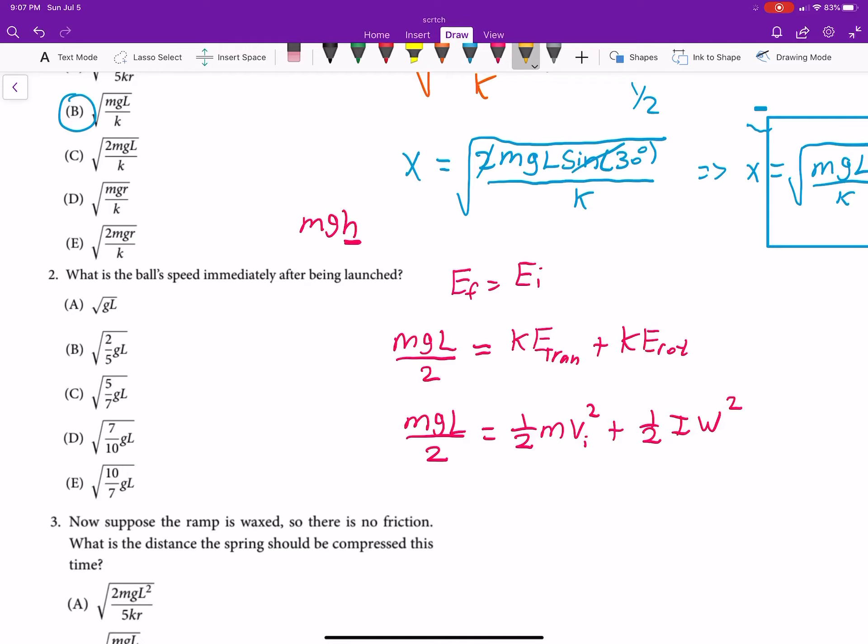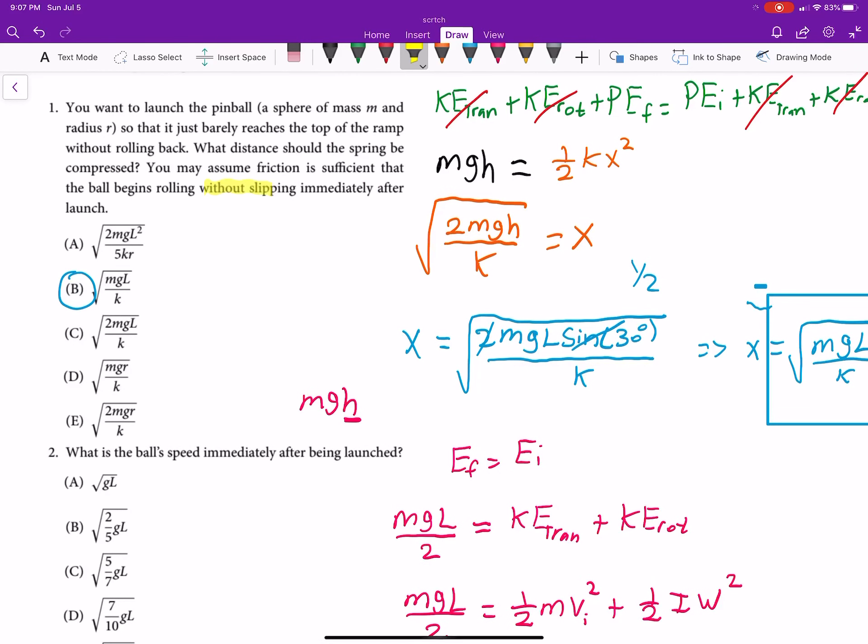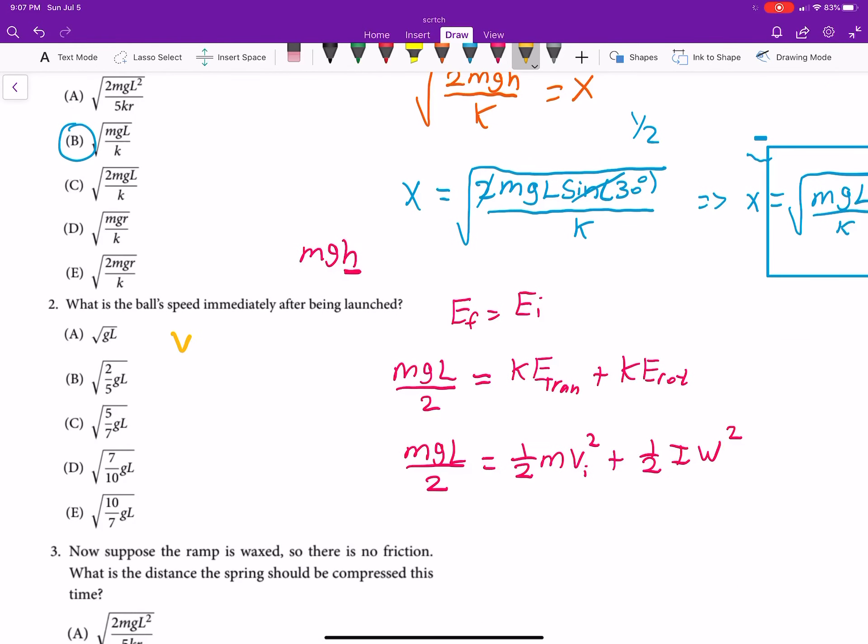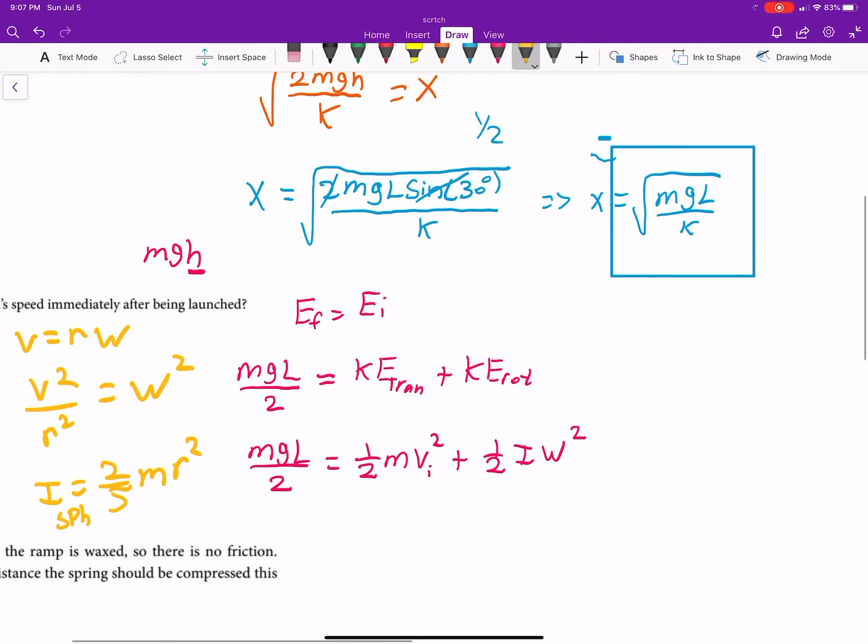A couple things that we'll want to know is, since it's mentioned here, without slipping, then we can say velocity is equal to r times omega or v squared over r squared is equal to omega squared. And the moment of inertia for a solid sphere is 2 fifths m r squared. So, that's for a sphere. OK, so we get